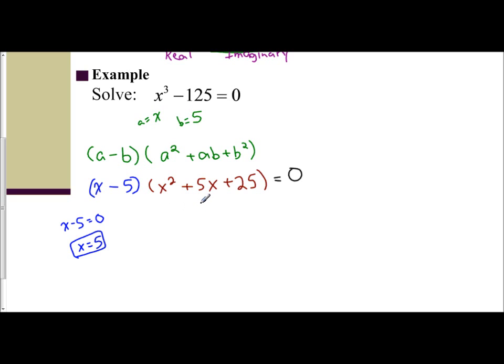This one, you cannot factor. This is going to give you an imaginary solution. You have to go to the quadratic formula here. x equals negative b plus or minus the square root of b squared minus 4ac all over 2a. And so if I take a look and I label everything, I get here that a is 1, b is 5, and c is 25.